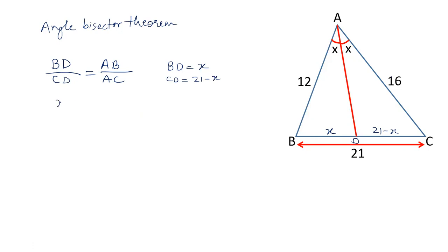Now, let's write down all the values. BD is X, CD is 21 minus X, AB is 12, AC is 16. Cancel this out. 3, 4.